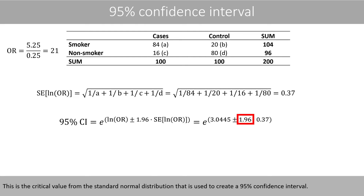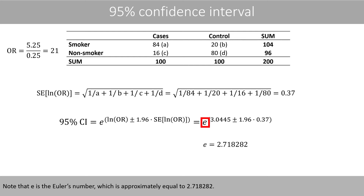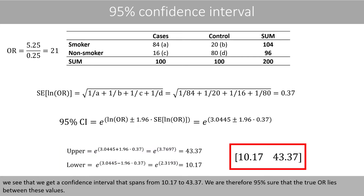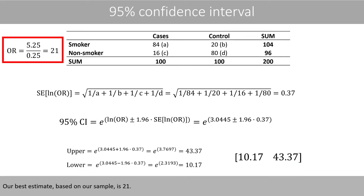This is the critical value from the standard normal distribution that is used to create a 95% confidence interval. Note that E is Euler's number, which is approximately equal to 2.718282. If we calculate the upper and lower limit of the interval, we see that we get the confidence interval that spans from 10.17 to 43.37. We are therefore 95% sure that the true odds ratio lies between these values. Our best estimate based on our sample is 21.